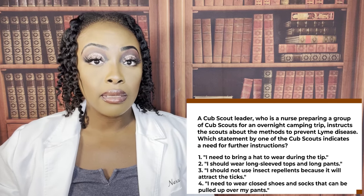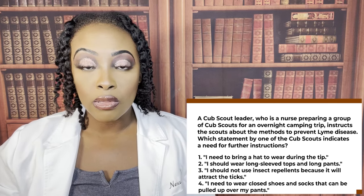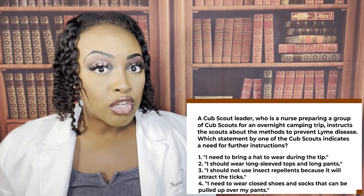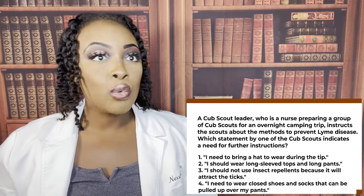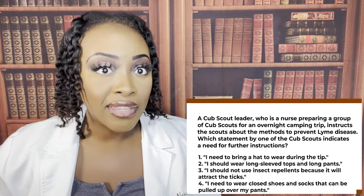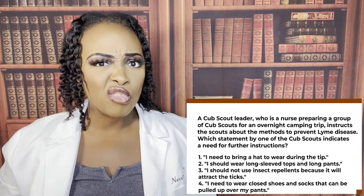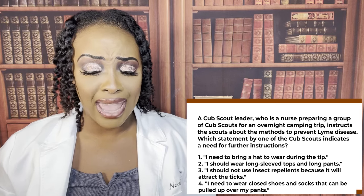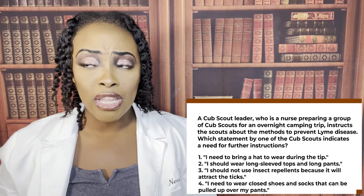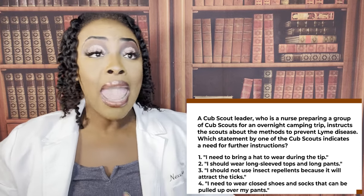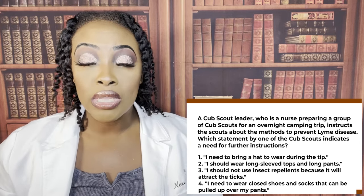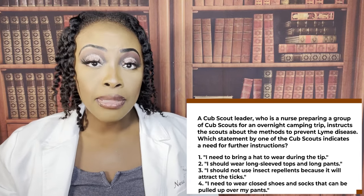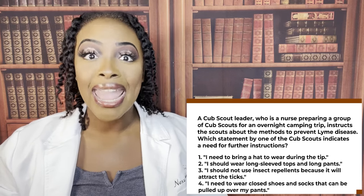The correct answer is number three. Whenever a question says 'which one needs further instructions,' they're really asking which one is the wrong answer. Saying you're not going to use insect repellents because it attracts ticks is absolutely wrong — you want it to repel the ticks. In fact, you put insect repellent not only on your skin but over your clothes too, where ticks may land or hide.